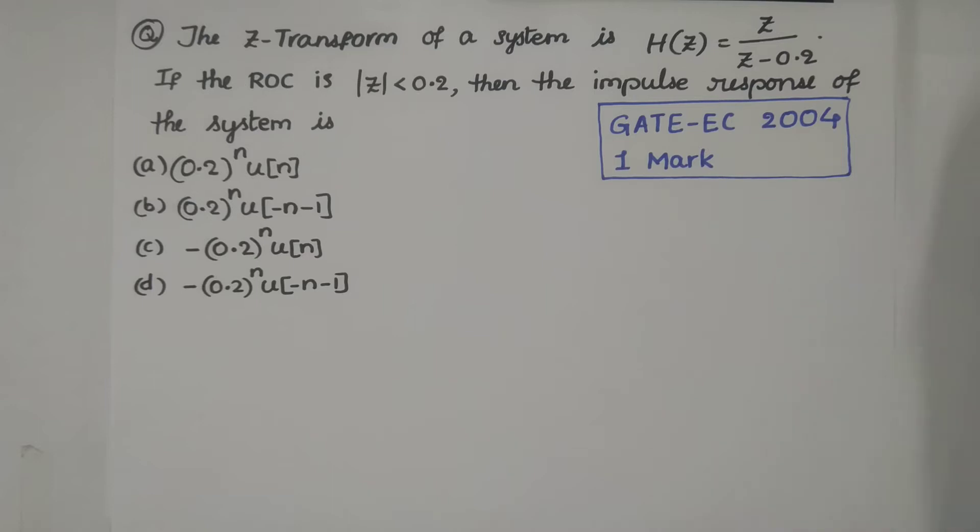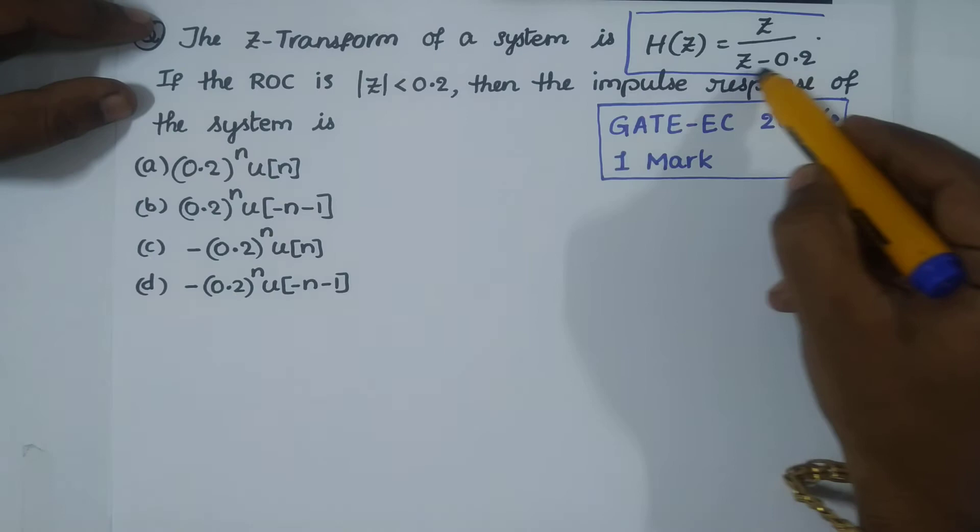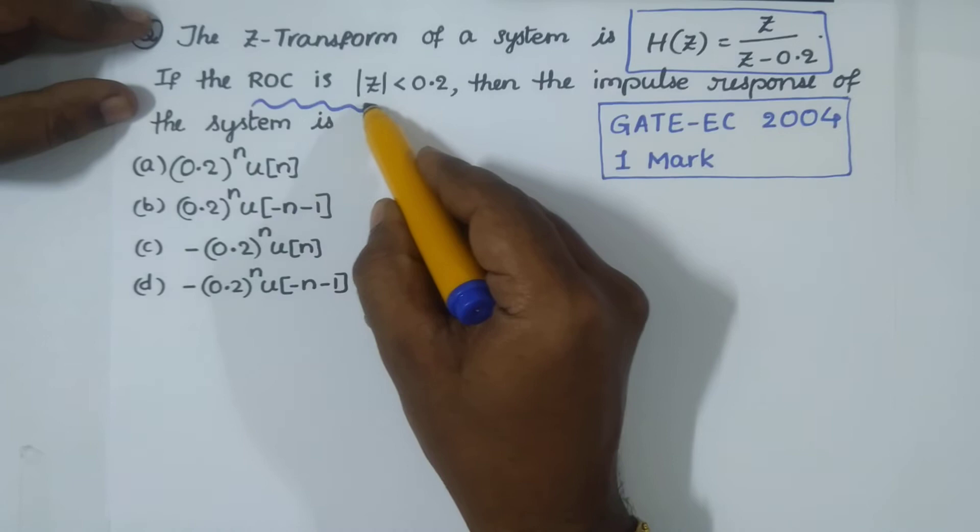Greetings, here we have one of the simplest GATE questions from Z-transform. The Z-transform of a system is H(z) = z/(z - 0.2). Given the region of convergence is |z| < 0.2, then the impulse response of the system is what we need to find.